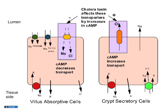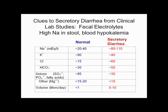In the small bowel, absorptive cells in the villus absorb glucose and amino acids via sodium-coupled transporters and also absorb sodium alone or with chloride. The crypts in the small intestine and colon actually secrete fluid through a chloride secretory process, with sodium following. Normally this is a minor player. Cholera toxin is very specific: it blocks uptake of sodium and chloride and stimulates secretion of chloride — this is why you get tremendous watery diarrhea with cholera.